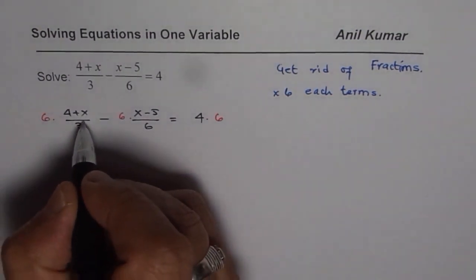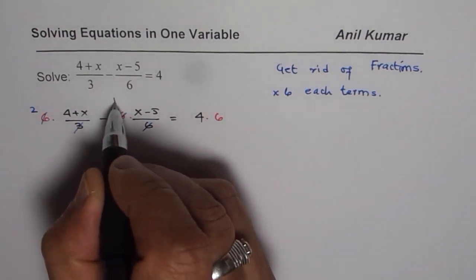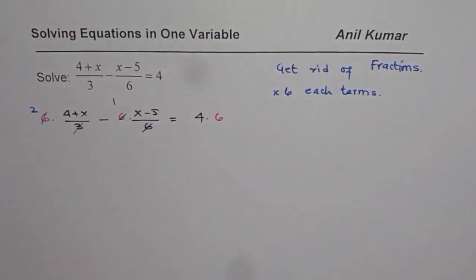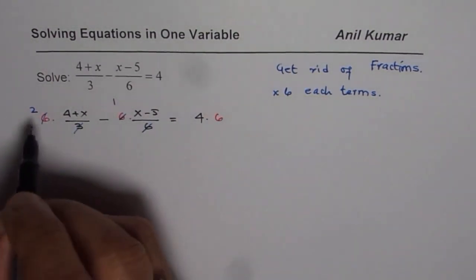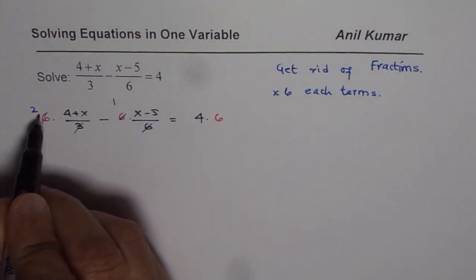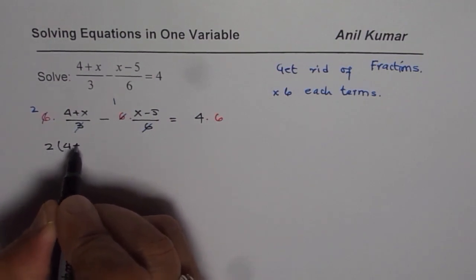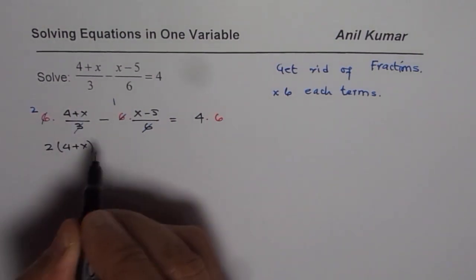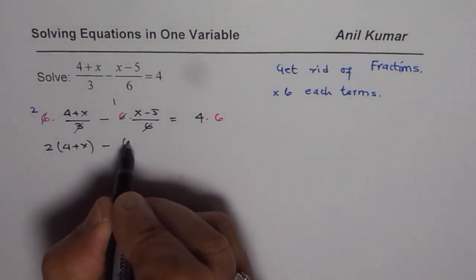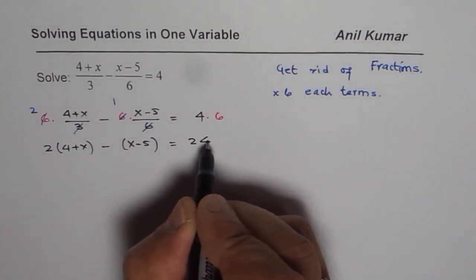When we do that we can simplify first. So that goes one time and this is 24, and then we can expand. When you have 2 times (4+x), remember to multiply both by 2. So it should be 2(4+x). Both terms should be multiplied by 2, then minus (x-5) equals 24.